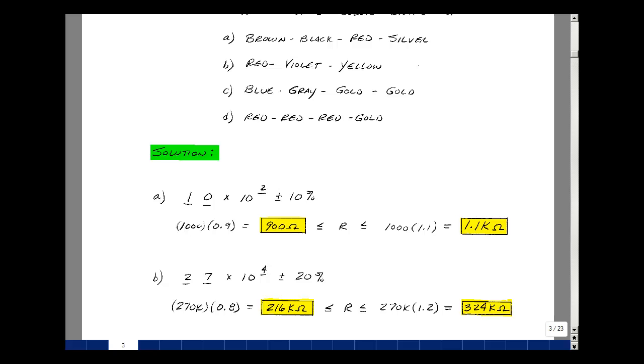Our next resistor was red, violet, yellow. Red is 2, violet is 7, and yellow is 4, and no color in the fourth band means you have a 20 percent tolerance.